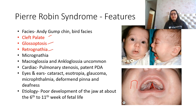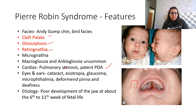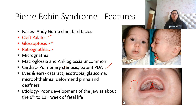Cardiac abnormalities in Pierre Robin syndrome include pulmonary stenosis and patent ductus arteriosus. Eye and ear findings include cataracts with esotropia, glaucoma, microphthalmia, deformed pinna, and deafness. You can see the child has low-set ears — below the line passing through the outer canthi.